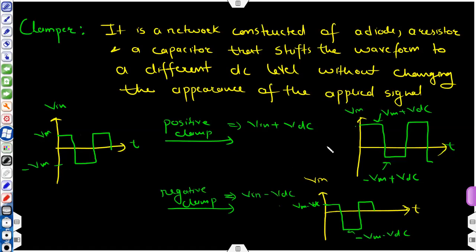Today we are going to start a new topic - the next application of the diode, that is the clamping application. This is also your experiment number four. A clamper is defined as a network constructed of a diode, a resistor, and a capacitor - so three things are required: diode, one resistor, and one capacitor.